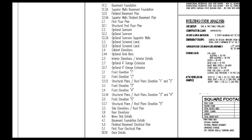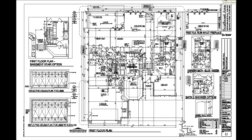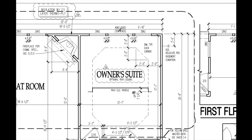The architectural drawings are going to provide us information such as dimensions and wall locations, finished materials and the locations of such, while the structural drawings will give us sizes of beams, headers, and support columns, and attachment methods.